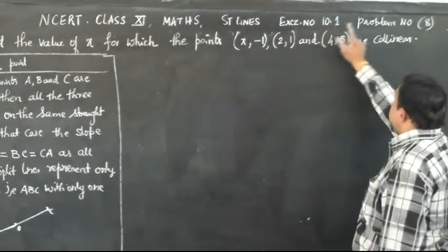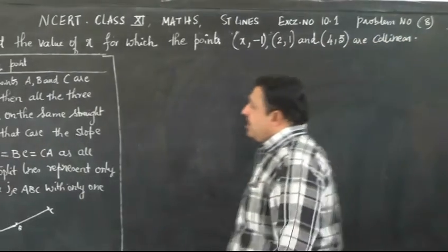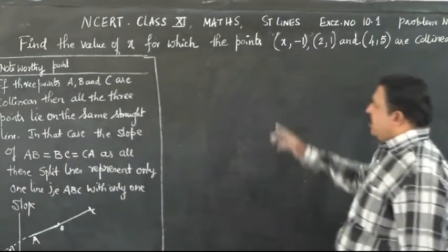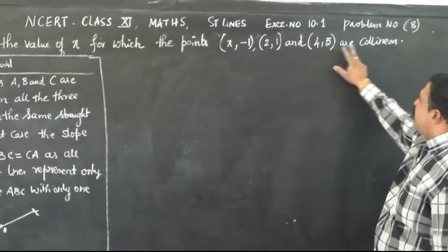Exercise number 10.1, straight lines, problem number 8. Find the value of x for which the points (x, -1), (2, 1), and (4, 5) are collinear.